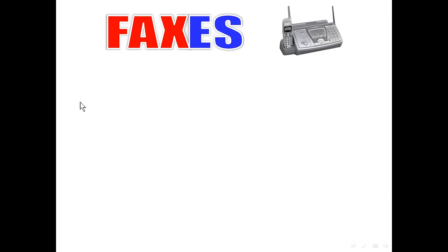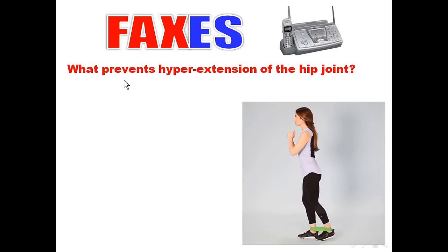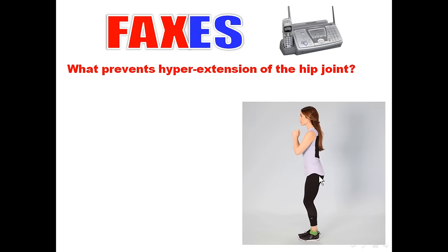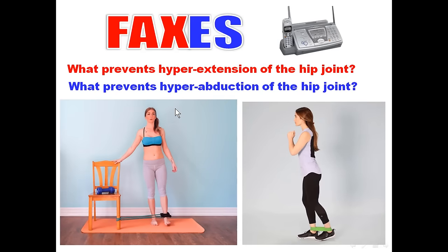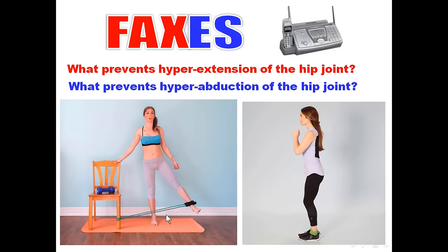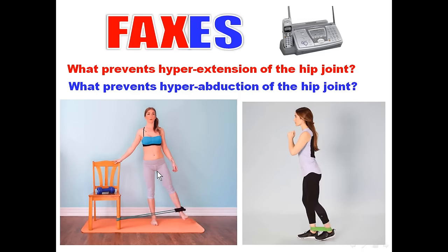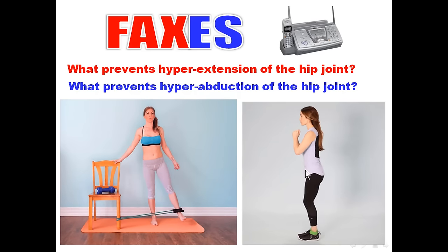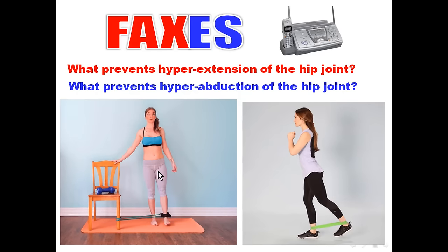Two important ligaments of the hip joint: the iliofemoral ligament prevents hyperextension of the hip joint, and the pubofemoral ligament prevents hyperabduction of the hip joint.